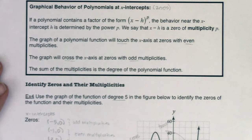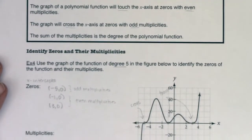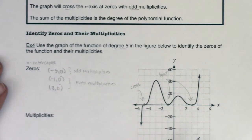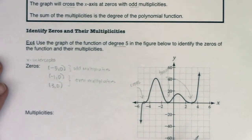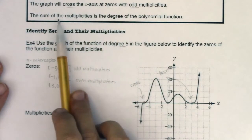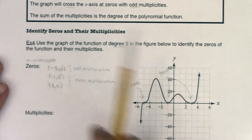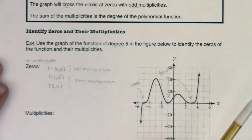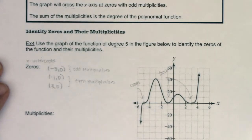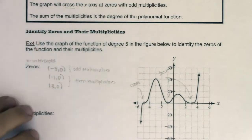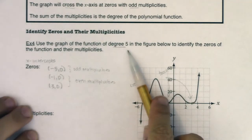We had cross, touch, touch. Now I want to take a look at the last sentence in this box. The sum of the multiplicities should be equal to the degree of the polynomial function. So when we think about how that plays out here, we have to have these three multiplicities add up to 5 somehow.